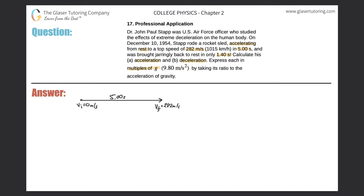After that, it says he was brought jarringly back to rest in only 1.4 seconds. So he would have still been traveling forward and to the right, and finally would have been brought to a stop. In terms of the red part, the time that elapsed was 1.40 seconds. The velocity at the end of the red part would be his final velocity, which was zero meters per second because it said he came to rest. His initial velocity at the start of the red part would have been 282 meters per second.